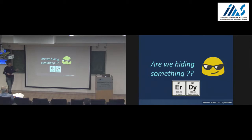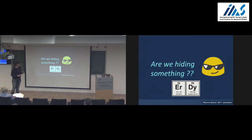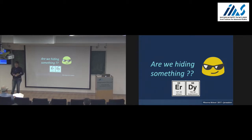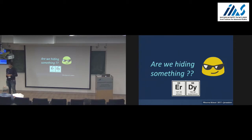Where does the magnetism come from? In the periodic table, dysprosium and terbium are the most magnetic elements. Erbium is also extremely magnetic, and they all belong to a family called lanthanides, located in the lower part of the periodic table. Lanthanides are very well known in scattering physics, and they belong to the so-called F-block of the periodic table.